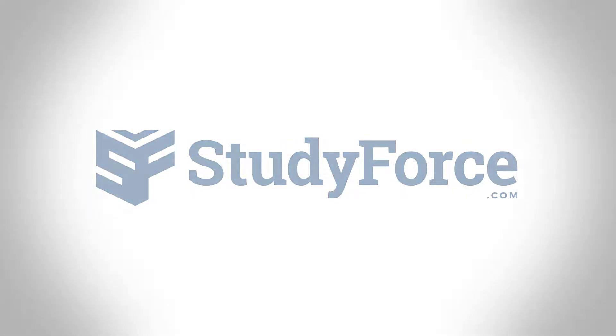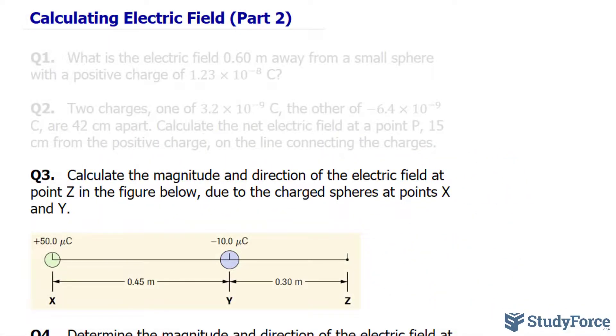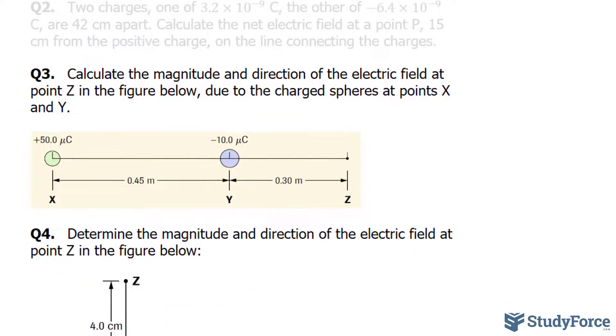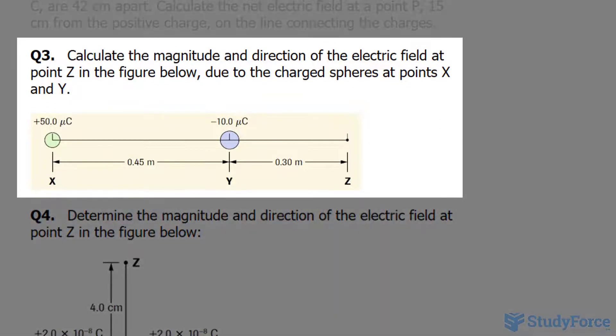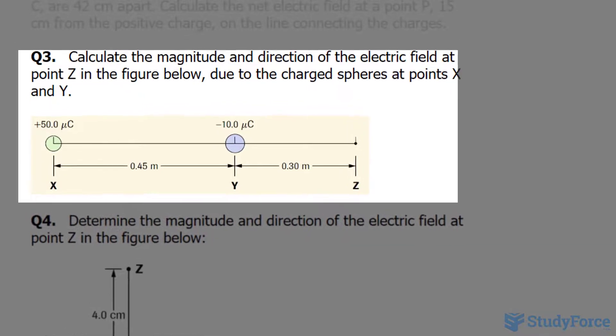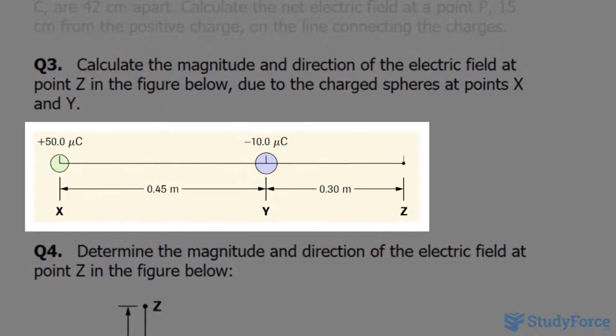Welcome back to part two of our lesson on calculating electric field. In part one we looked at questions one and two, and in this lesson we'll focus on question three. Question three reads, calculate the magnitude and direction of the electric field at point z in the figure below, due to charged spheres at point x and y.